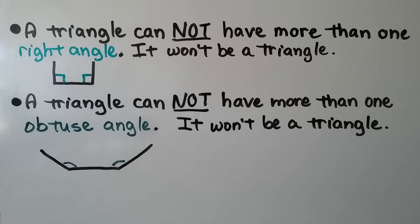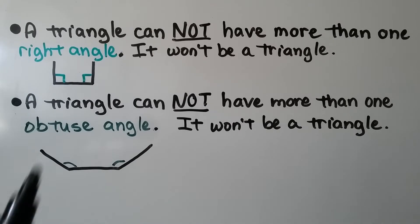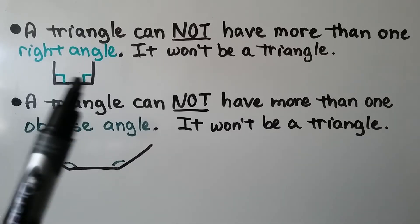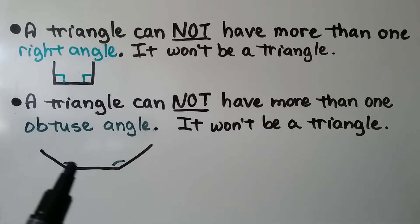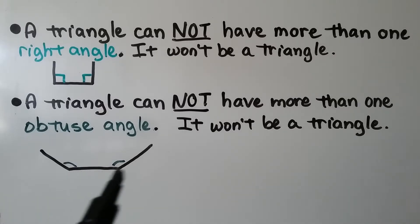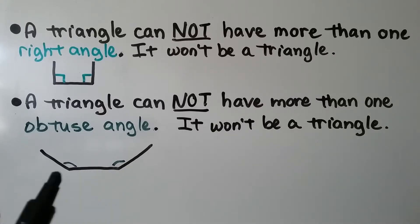A triangle cannot have more than one right angle — if it did, it wouldn't be a triangle. And a triangle cannot have more than one obtuse angle either; it won't be a triangle because it won't be able to close.